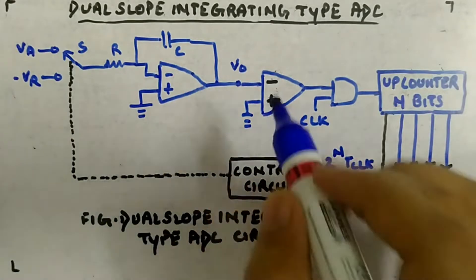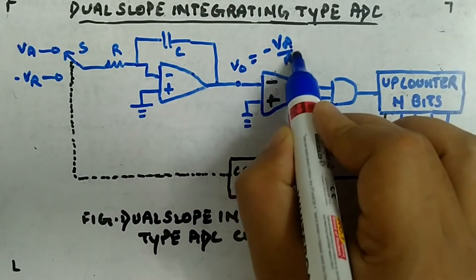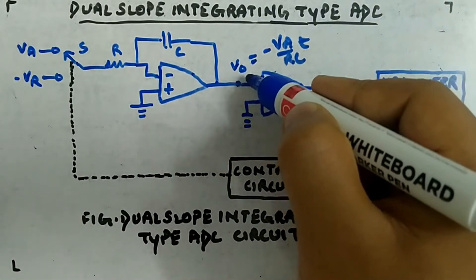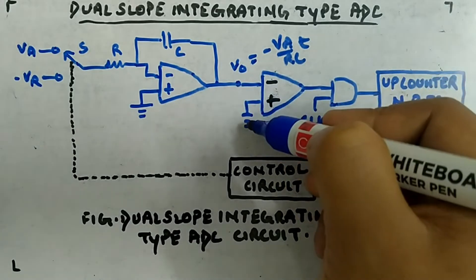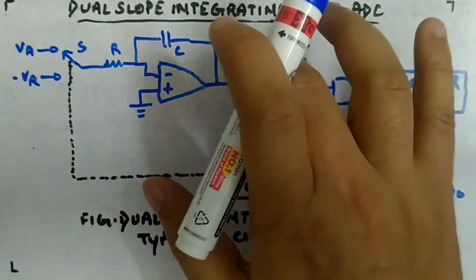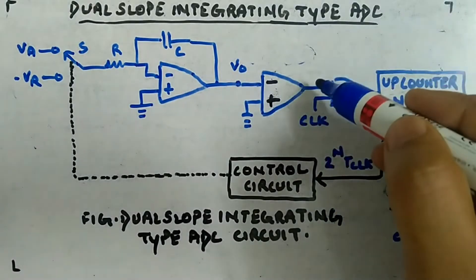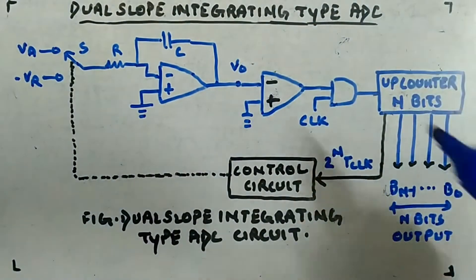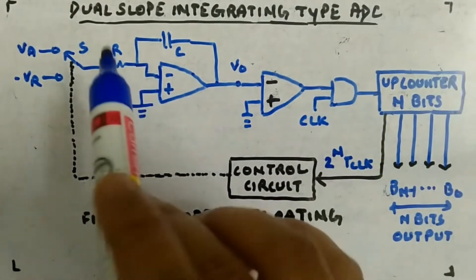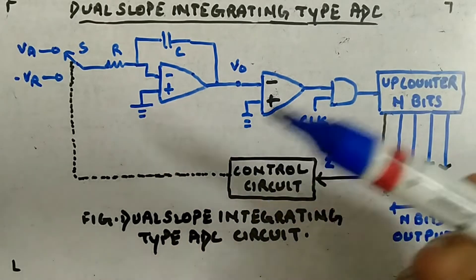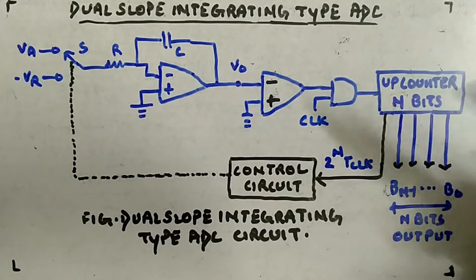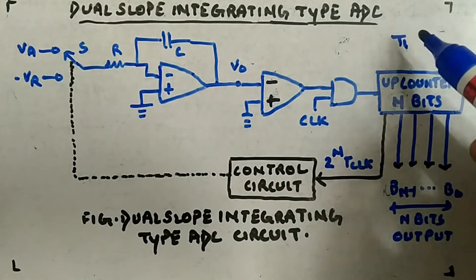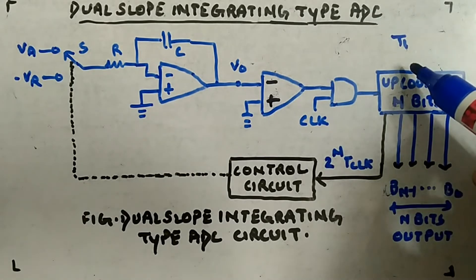V0 is minus va divided by rc times t — time is positive, so because of the negative sign this is at a negative value, while the positive terminal is at zero volts. So the comparator output is automatically high. The clock is fed to the up counter and the counter starts up-counting. The capacitor keeps charging to minus va divided by rc times t, and at time t1 — when the counter reaches 2 to the power n times t_clock — the counter resets.